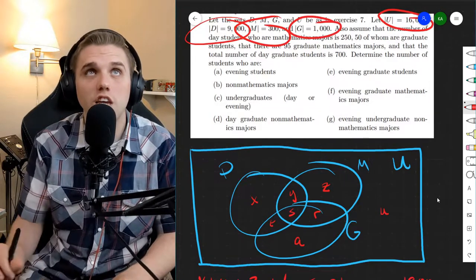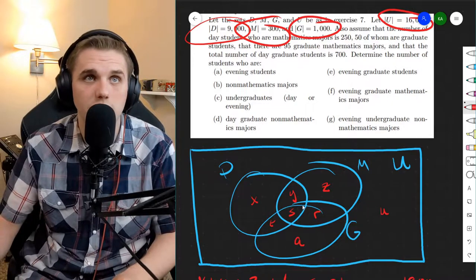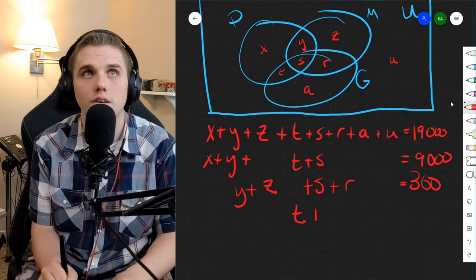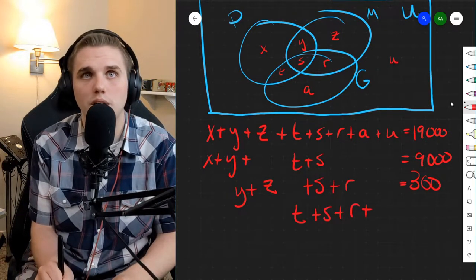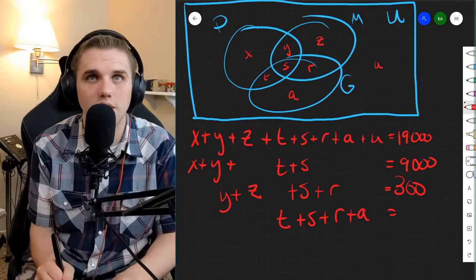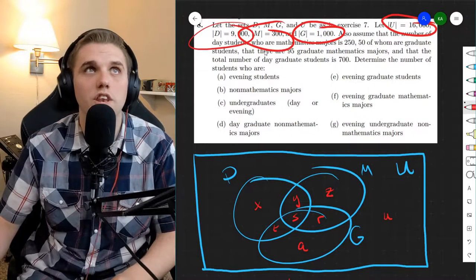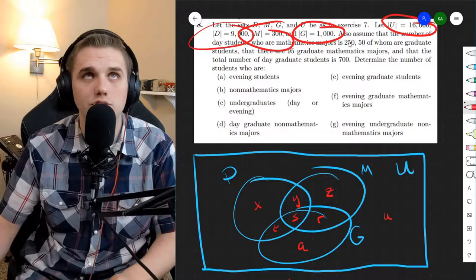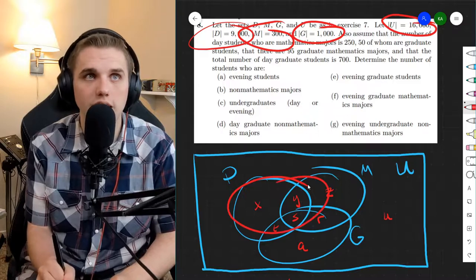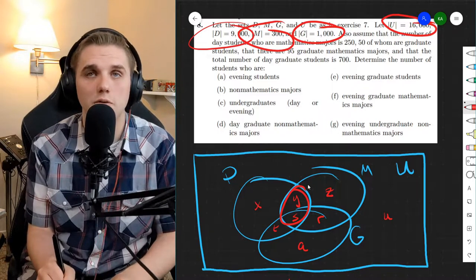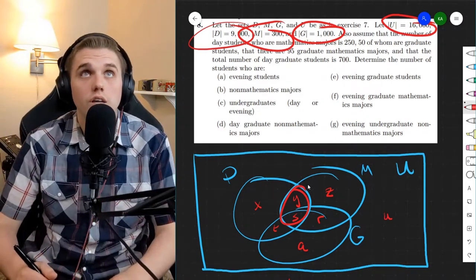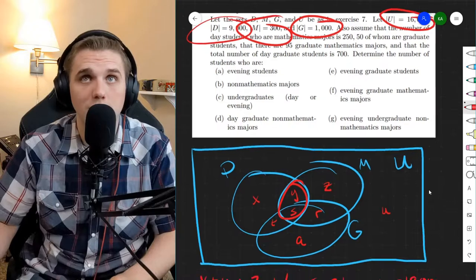Next, we know that the size of G is 1,000. G is T, S, R, and A, those four sections. So T plus S plus R plus A gives us 1,000. Next up, we have also assume the number of day students who are mathematics majors is 250. Day students who are also mathematics majors, we're zoning in from the day students into the mathematics majors, that's 250. So Y plus S is 250.